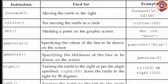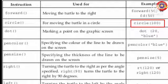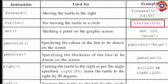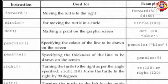The second instruction is 'circle'. Circle is used to move the turtle in a circle. Example: circle(100). This instruction will help us to draw a circle having a radius of 100 units. The third one is 'dot' — this is used to mark a dot on the graphic screen. Example: dot(20, 'blue').